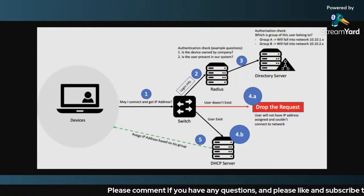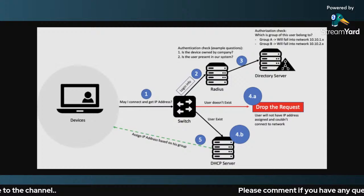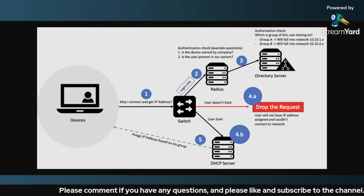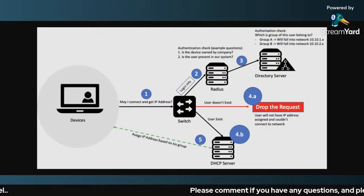Inside the RADIUS server, authentication checks are performed. It checks whether your device is owned by the company or is a personal device, and whether the device is present in the organizational Active Directory. It checks through the directory server, which is the Active Directory. If the device is found, it will be assigned to a VLAN — such as VLAN 1 or VLAN 2, Group A or Group B — depending on which group it belongs to.